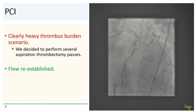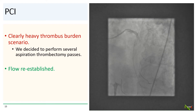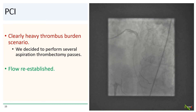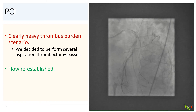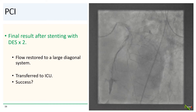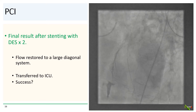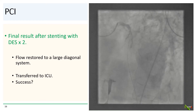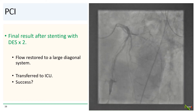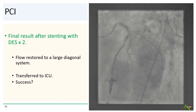Back to our case: there was clearly a heavy thrombus burden, and we had not made much progress with POBA alone. We decided to perform several aspiration thrombectomy passes, and with that we were finally able to establish some flow in the diagonal branch. After stenting with two drug-eluting stents, we obtained a reasonable final result with flow restored to the large diagonal system. We transferred the patient to the ICU and the call team started to head home.